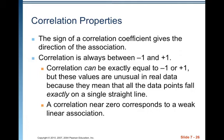Correlation is always between negative 1 and positive 1. So if you calculate a correlation, which will be represented by the lowercase r, and it ends up being 2.3, you've got a problem. It has to be between negative 1 and positive 1. Correlation can be exactly equal to negative 1 or positive 1, but these values are unusual in real data because they mean that all the data points fall exactly on a single straight line, so that doesn't happen frequently.